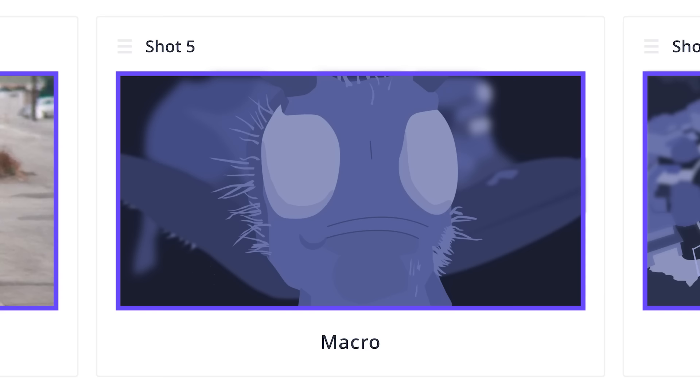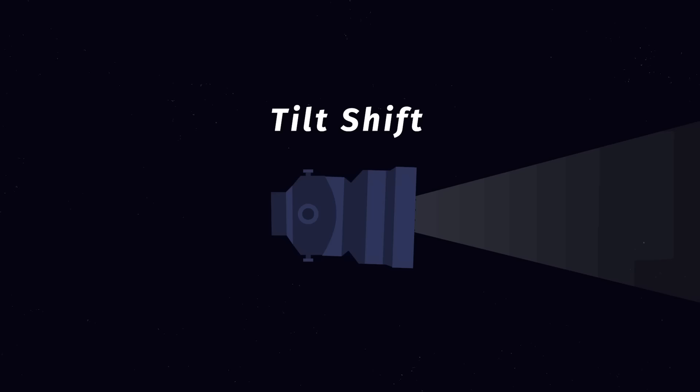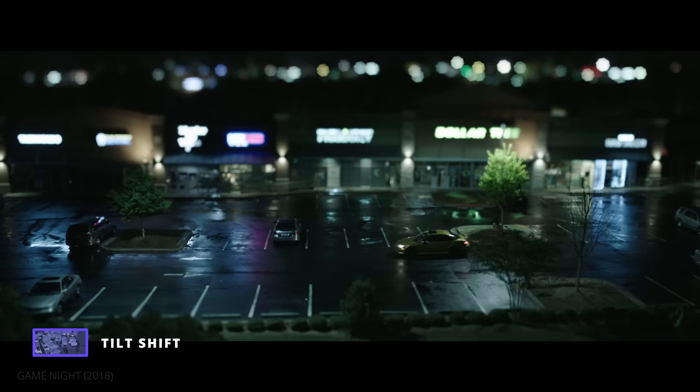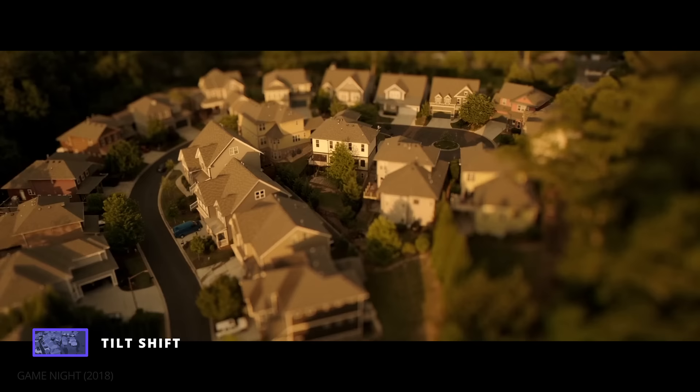Moving on to our final lens, the tilt-shift lens. A normal lens gives a consistent plane of focus, but in a tilt-shift lens, the focus mechanism can be shifted left or right or tilted up and down to manipulate the image. In the movie Game Night, aerial tilt-shift shots are used to create a miniature effect, making houses and large settings appear like set pieces on a board game.